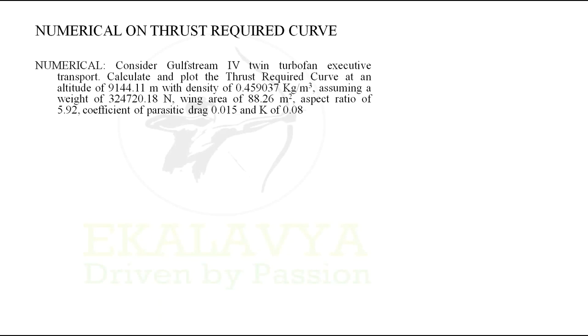I have taken a common numerical from a famous university question paper. Consider Gulfstream 4 twin turbofan executive transport. Calculate and plot the thrust required curve at an altitude of 9144.11 m with density of 0.459037 kg/m³, assuming a weight of 324720.18 N, wing area of 88.26 m², aspect ratio of 5.92, coefficient of parasitic drag CD0 of 0.015, and k of 0.08.